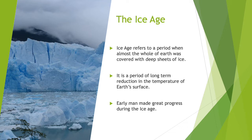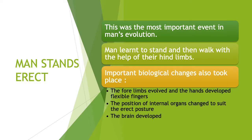The first and most important stage was when man started standing erect. As we know, tree apes were our ancestors. These tree apes lived around 10 million years ago. Some of the apes came down from the trees and gradually learned to stand and then to walk with the help of their hind legs. This was the most important event in man's evolution because the erect position helped early man to look farther in all directions and to save themselves from their enemies, who were mostly big animals.